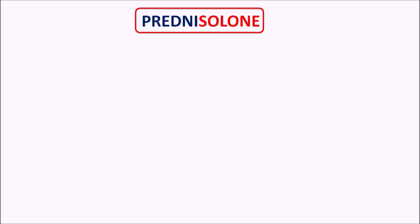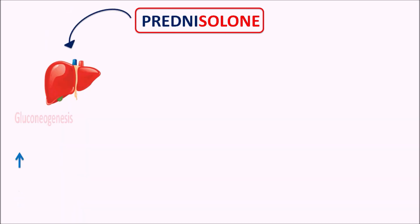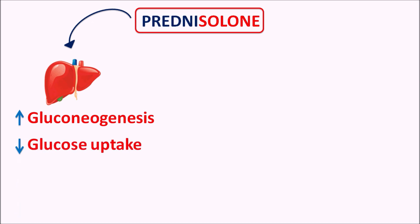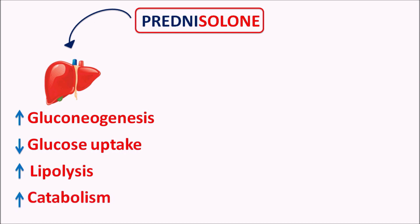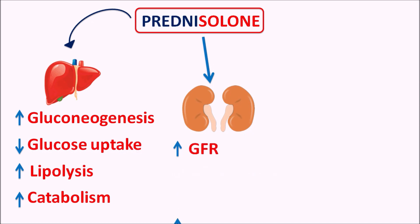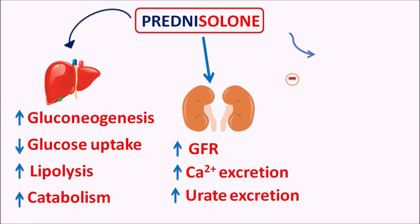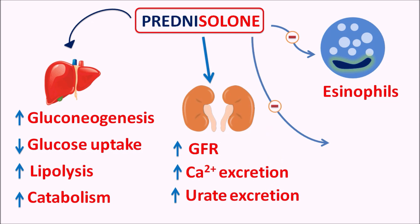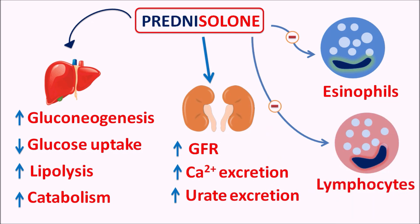Now let us see how this drug acts. Prednisolone can show a variety of actions. It mainly affects the liver where it increases hepatic gluconeogenesis and reduces glucose uptake and utilization, thereby increasing glucose levels. It can also increase lipolysis — breakdown of fat — and increase the catabolism of proteins. Similarly, it can affect the renal system where it increases the glomerular filtration rate, increasing the excretion of calcium and potassium. It can also inhibit eosinophil activity as well as lymphocytes, which are mainly responsible for anti-inflammatory and anti-allergic responses.